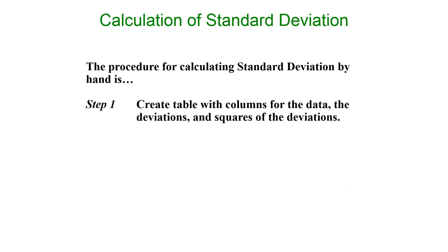Step one, create the table with the columns for the data, the deviations, and the squares of the deviations. In other words, you're gonna have an X column, an X minus X bar column, and an X minus X bar squared column. List the data and find the sum and the average of the data or the mean of the data. So you got to find X bar.